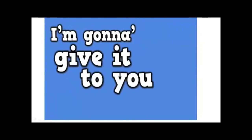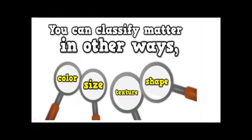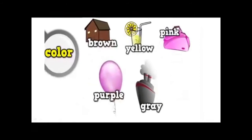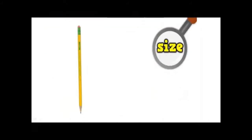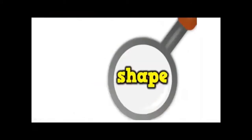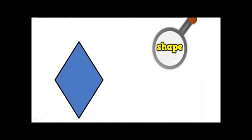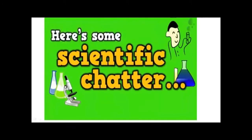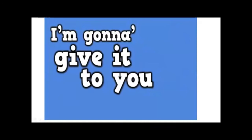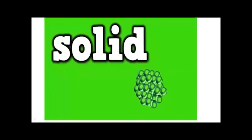You can also classify matter in other ways — by color, size, texture, or shape. Colors include red, white, blue, orange, black, green, brown, yellow, pink, purple, and gray. Size can be big, small, medium, skinny, wide, thick, or thin. Texture can be spiky, furry, smooth, bumpy, soft, rough, or lumpy. Shapes include square, circle, rectangle, star, oval, triangle, trapezoid, hexagon, diamond, and octagon.